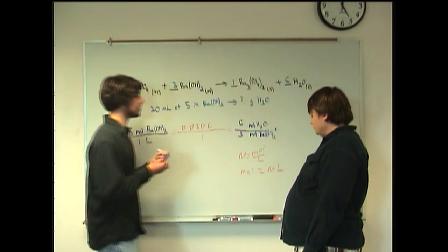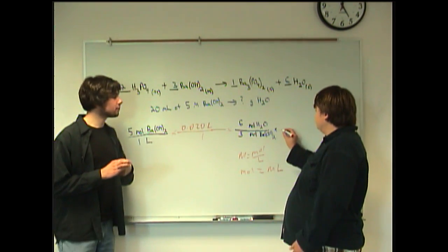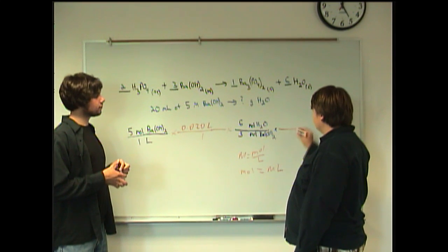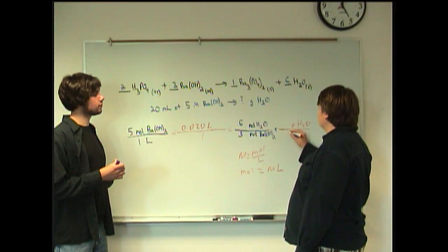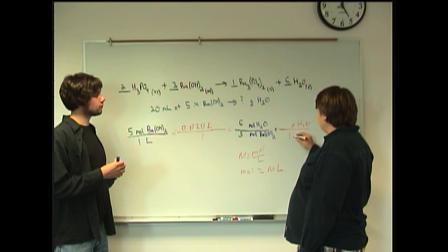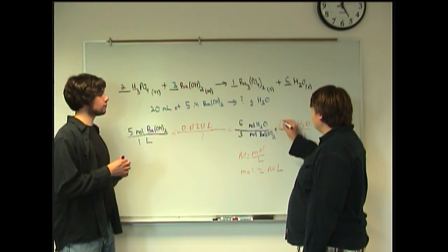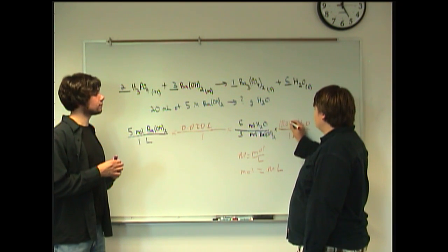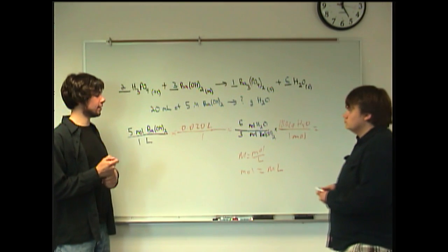Oh, yeah. Just, you know. Grams H2O per one mole. And I think the molar mass of water is something like 18.02. Exactly. Alright. You got a calculator with you?